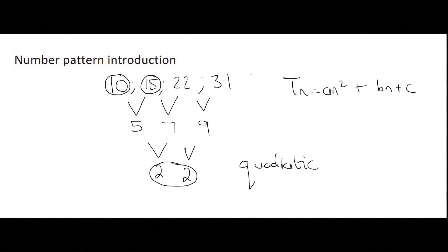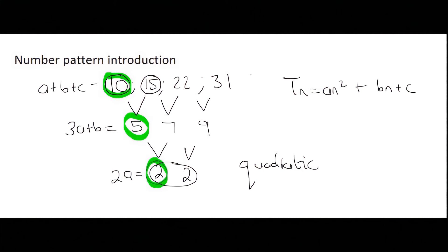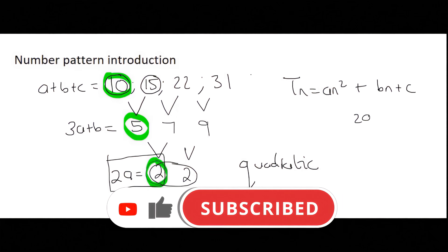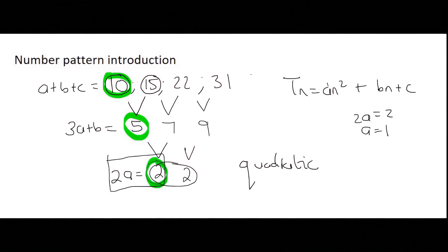Some schools use one method and other schools use another. In the first method, you look at the constant second difference (2), the first value in the first difference row (5), and the first term (10). You remember three equations: 2A = 2, 3A + B = 5, and A + B + C = 10. Starting from the bottom equation: 2A = 2, so dividing by 2 gives A = 1.